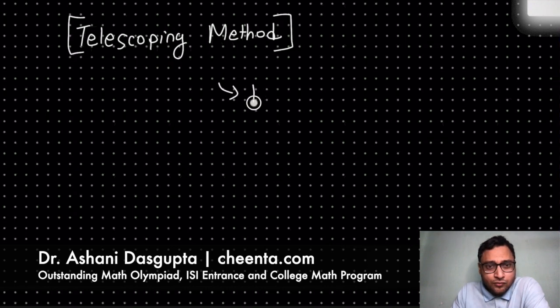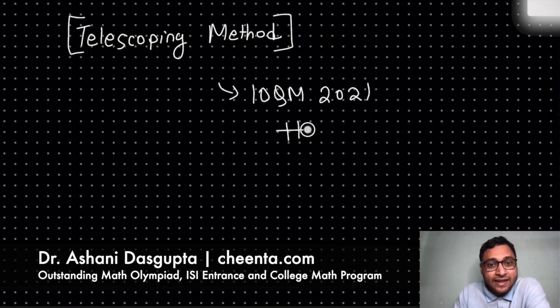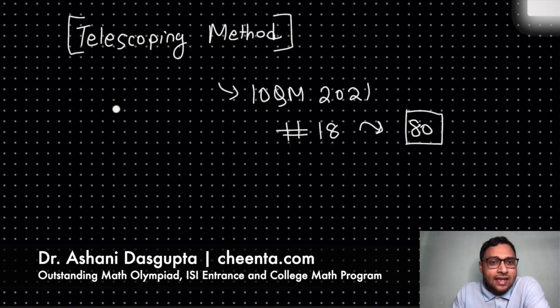In this particular video we will work on a problem from IOQM 2021. This is problem number 18 and the answer to this problem is 80 if you're just here for the answer. We will use this problem to understand further what the telescoping method is and how we can use it to solve beautiful problems.